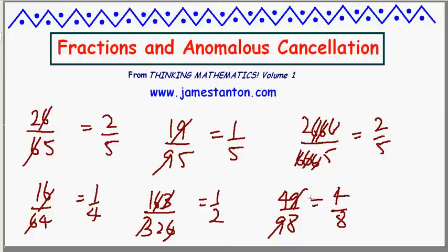Well actually, of course I'm pulling the wool over your eyes here. This is all just a falsehood. It's just by coincidence that one can cross out these particular numbers. This is called anomalous cancellation. Everything you're seeing on the board here is just a coincidence. It's not actually true.